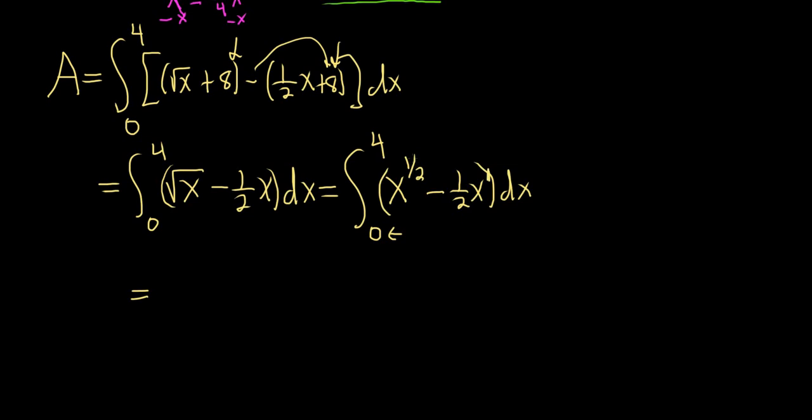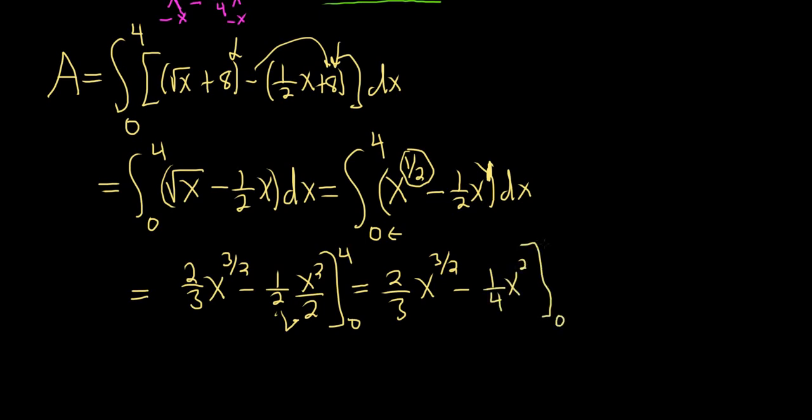Now we can use the power rule to integrate. So you add 1 here. So 1 half plus 1 is 1 half plus 2 halves. So that's 3 halves. So we're supposed to divide by 3 halves. However, whenever you divide by a fraction, typically it's easier to multiply by the reciprocal. So 2 thirds minus 1 half. And when you add 1, you'll get a 2. So it's x squared over 2. So this is 2 thirds x to the 3 halves minus 1 fourth x squared. And we're going from 0 to 4.